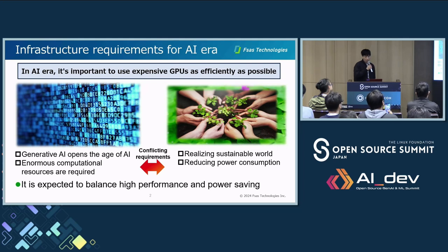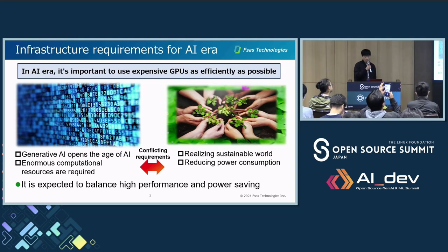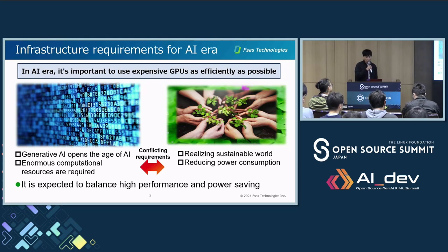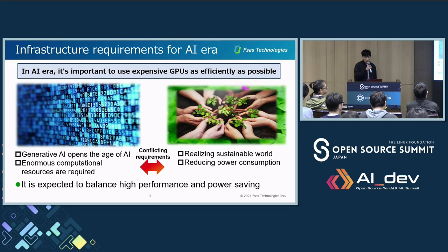Generative AI opens the edge of AI. As a result, enormous computational resources are required. They need lots of power to operate. On the other hand, realizing a sustainable world is an urgent issue for us. We are always expected to reduce power consumption. That means we need to satisfy high performance and power saving simultaneously.